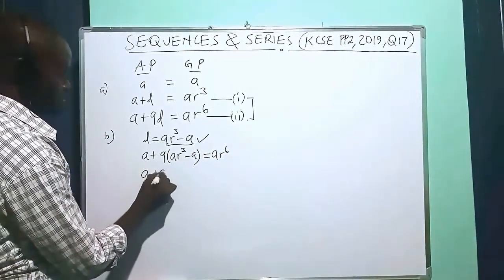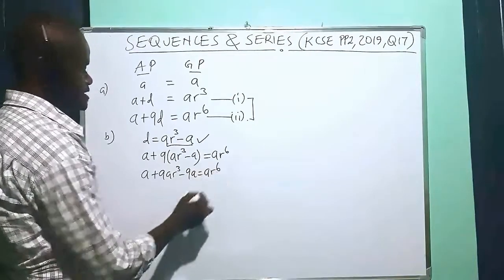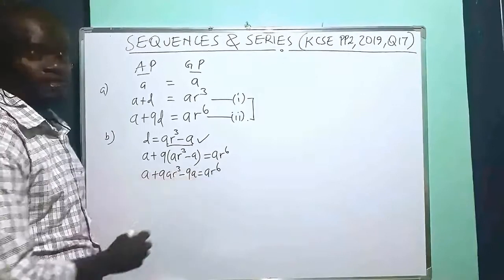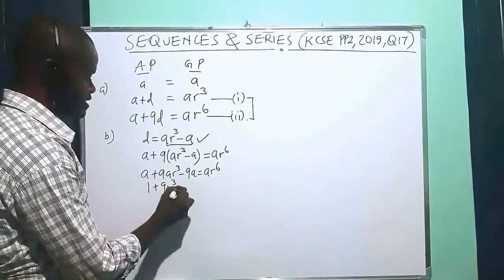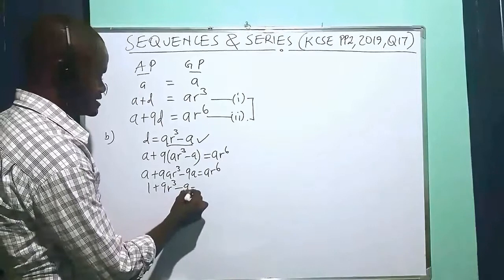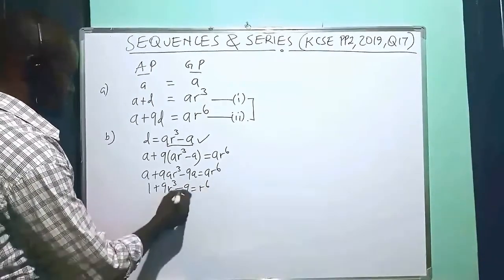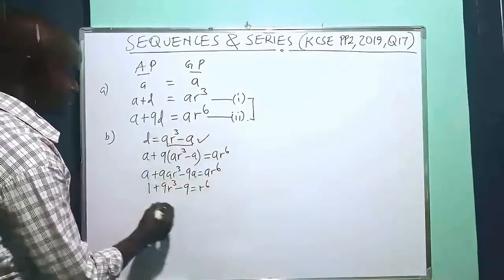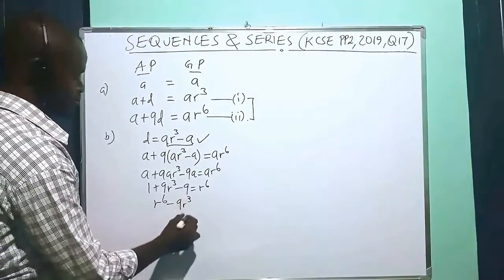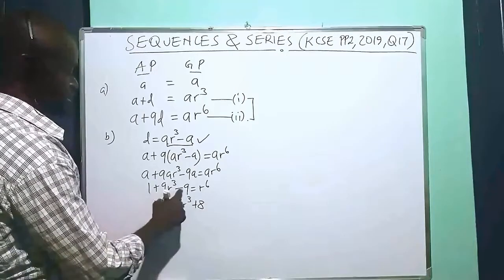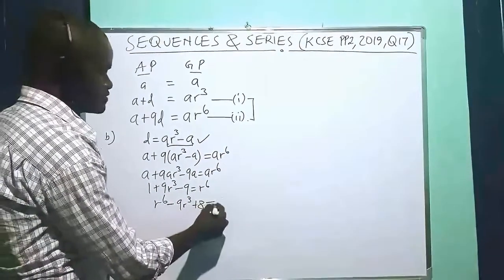We note that A is a common factor, so dividing all through by A gives: 1 plus 9R³ minus 9 equals R^6. Rearranging by taking the left-hand side to the right-hand side, we get R^6 minus 9R³ plus 8 equals 0. Note that 1 minus 9 gives negative 8, and moving it to the right-hand side makes it positive.